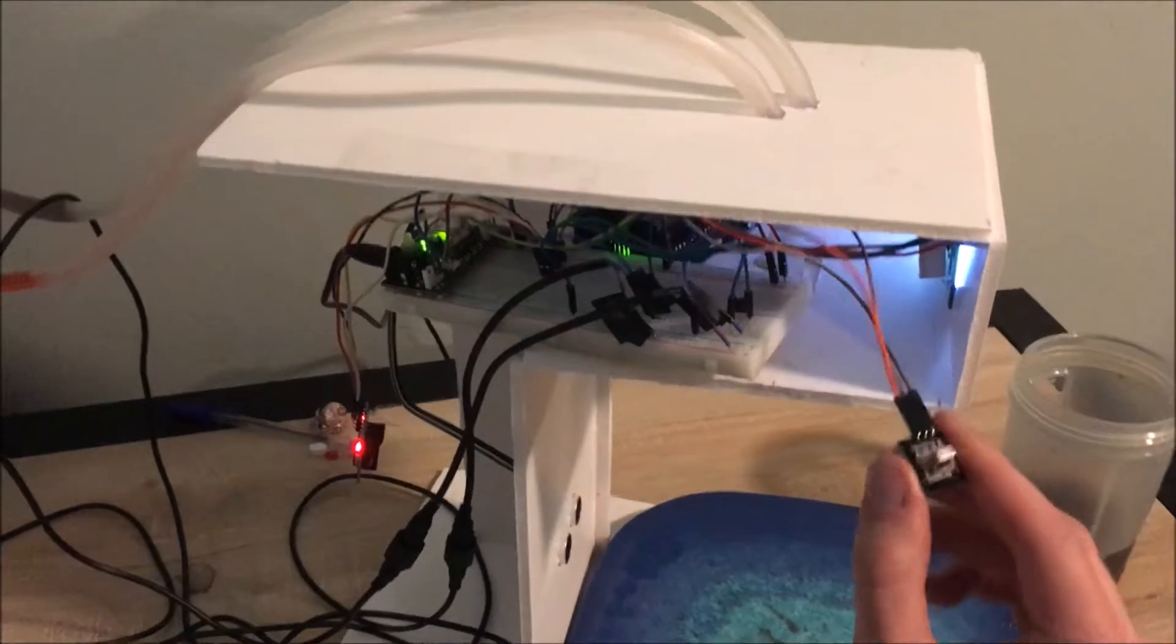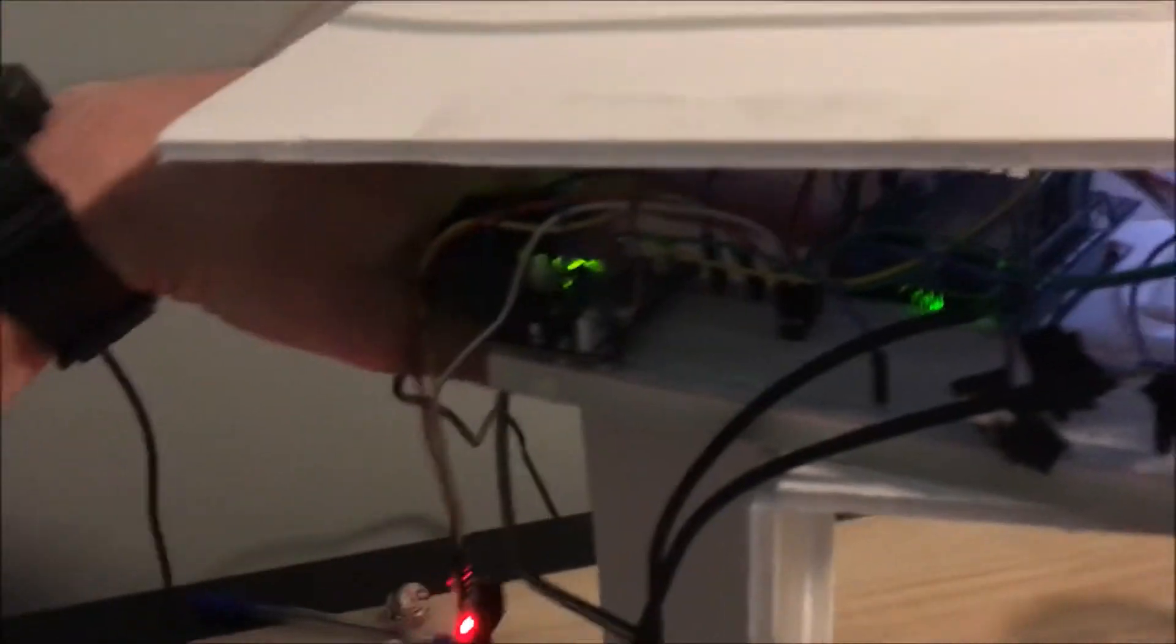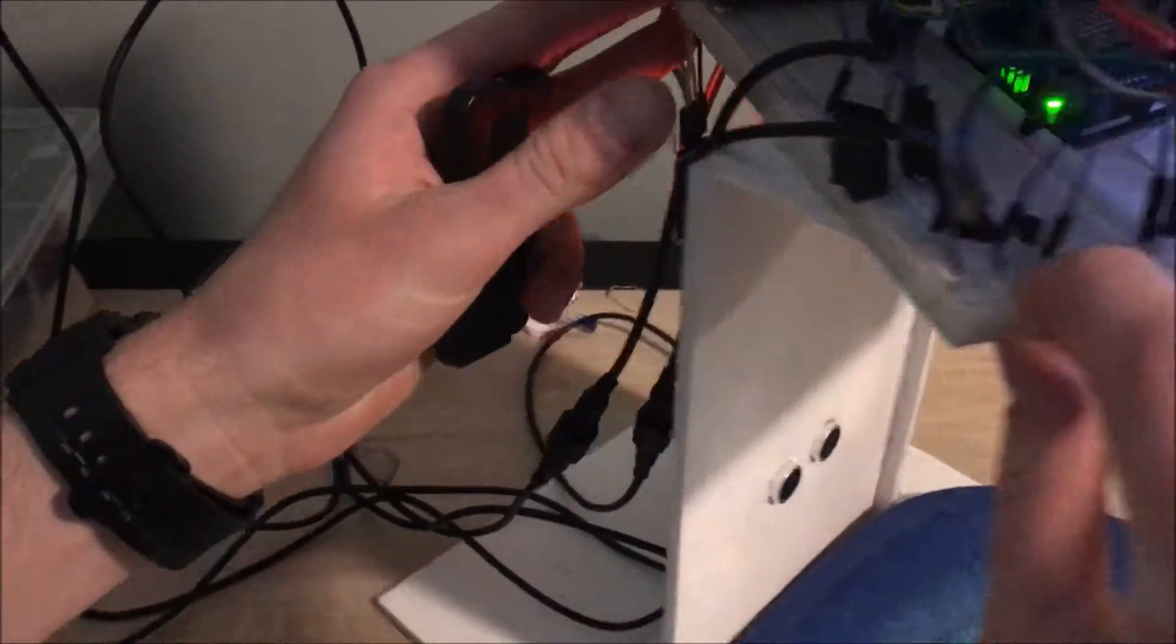So this is the receiver for the remote. Back there we have an Arduino. Right here is a watch or a clock, so that as you're going throughout your day, you can see what time it is.